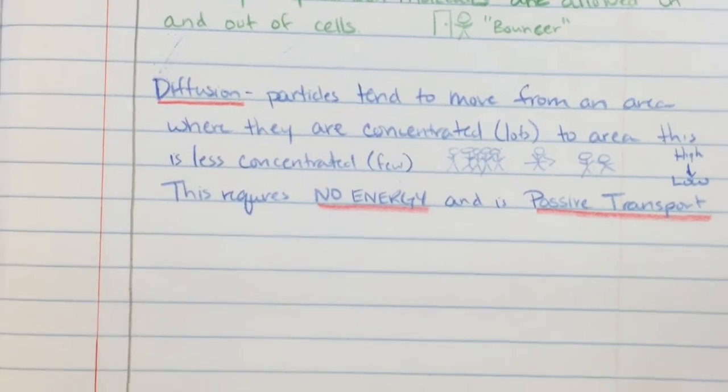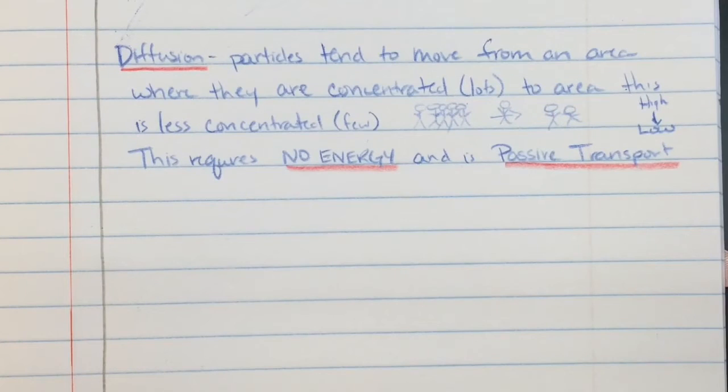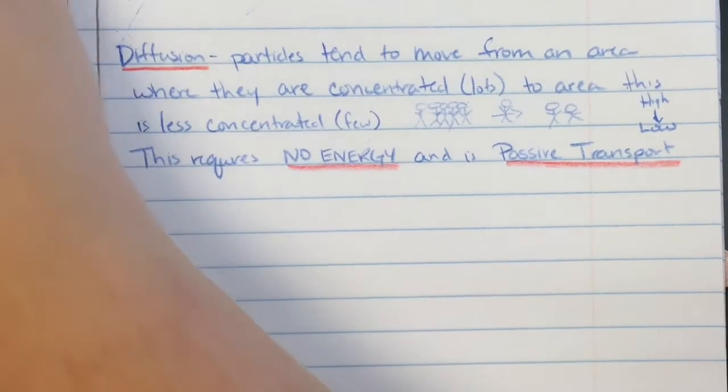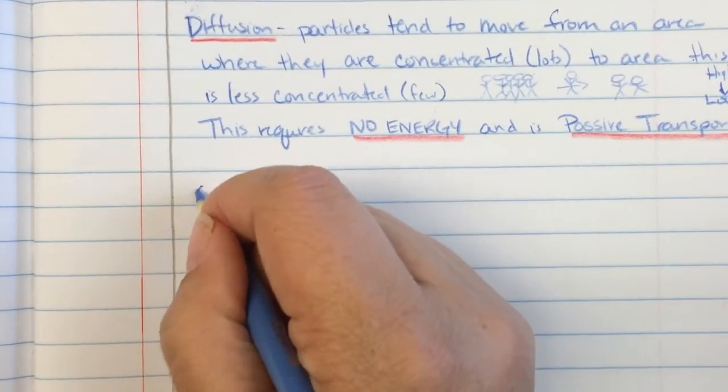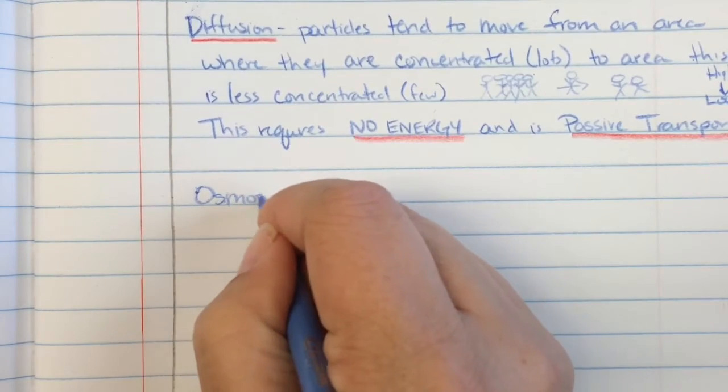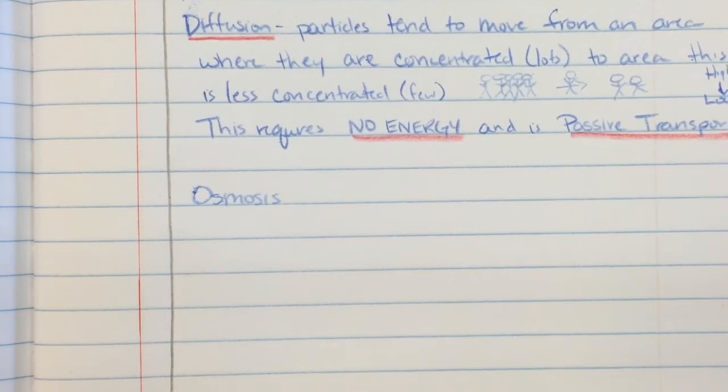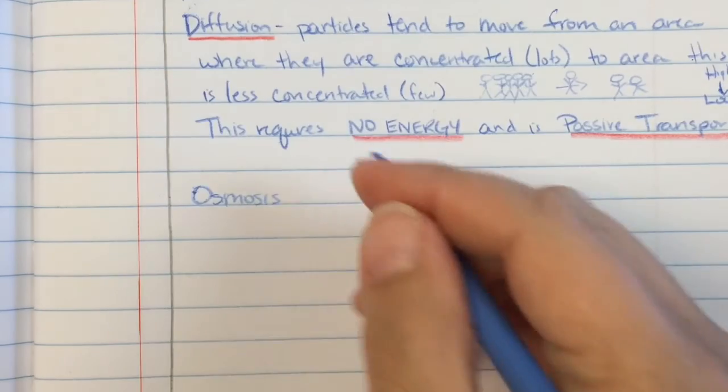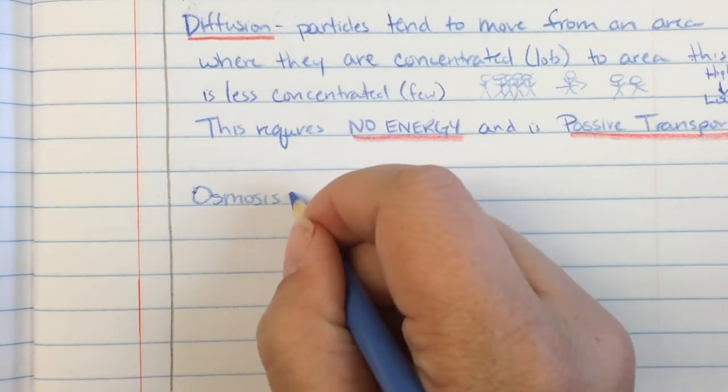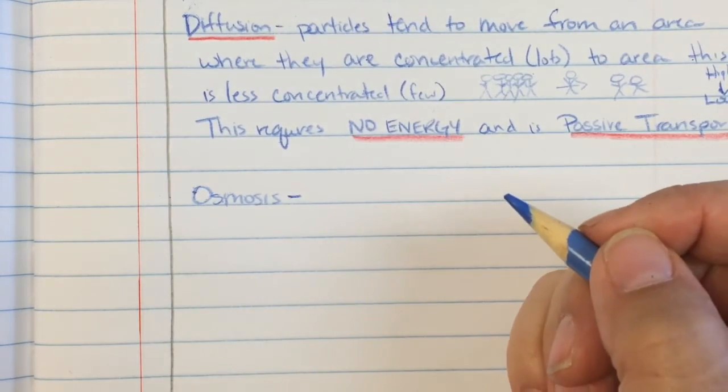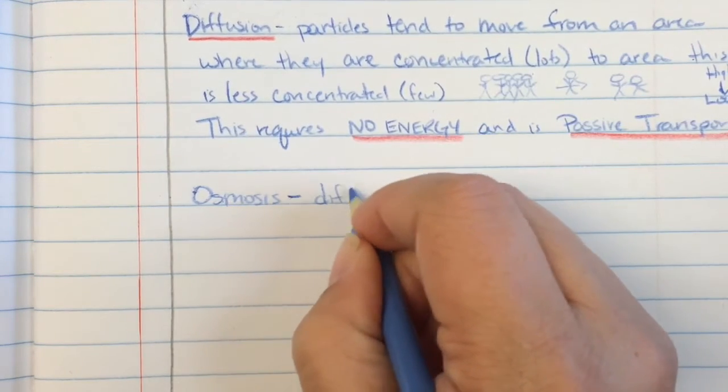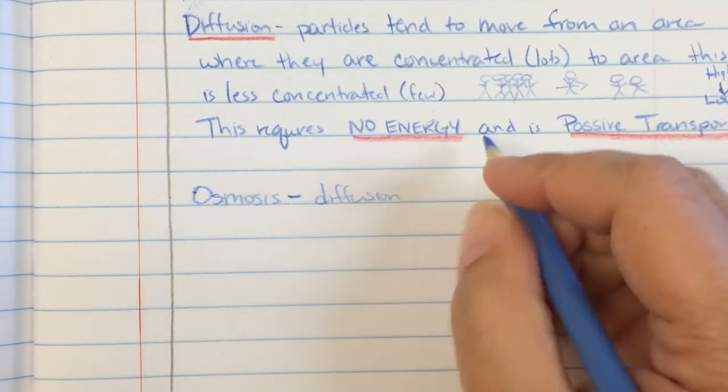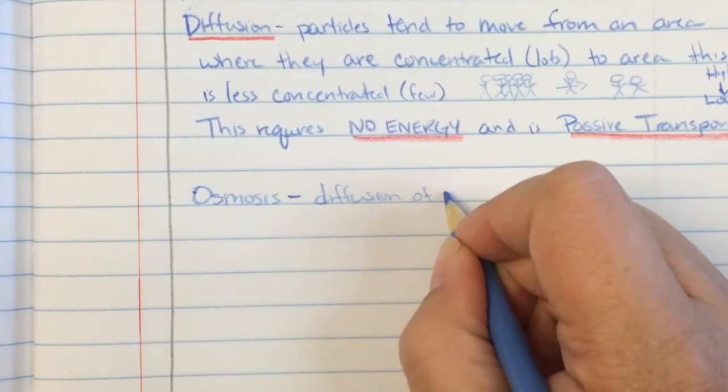We also have a special form of passive transport that happens with water. So let's do this in a beautiful watery light blue because it's kind of related. And that is called osmosis. Now a movie that's fun to watch but has nothing to do with actually osmosis is Osmosis Jones. But I know a lot of you have heard the word osmosis through him. So this is the diffusion of water.